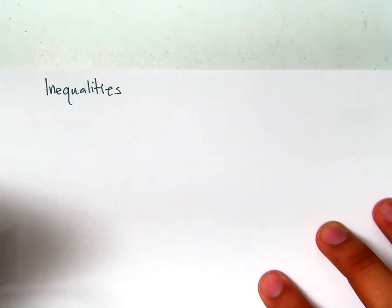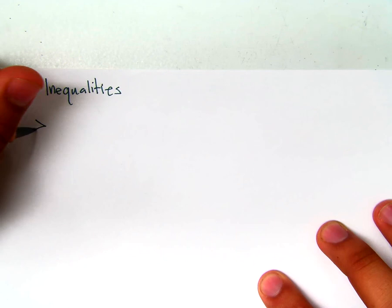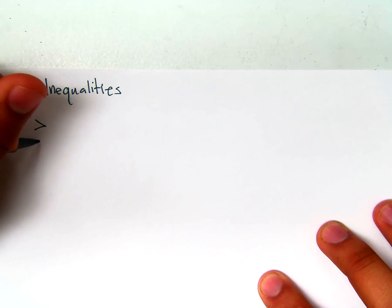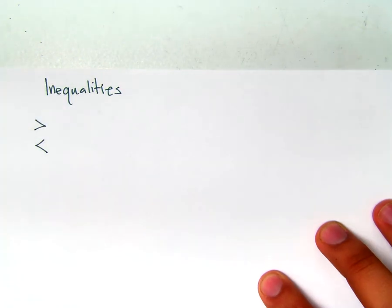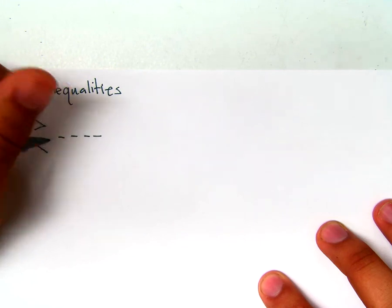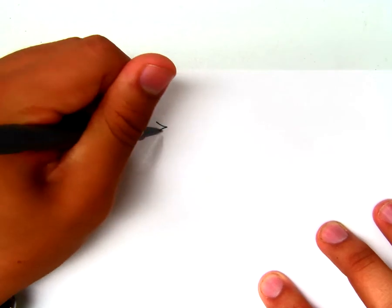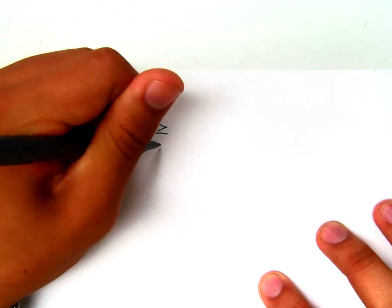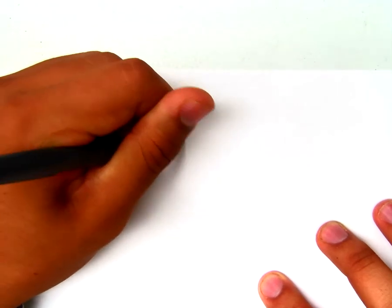If we have these two symbols, what kind of line should we get? Dotted. What about these two? Solid.